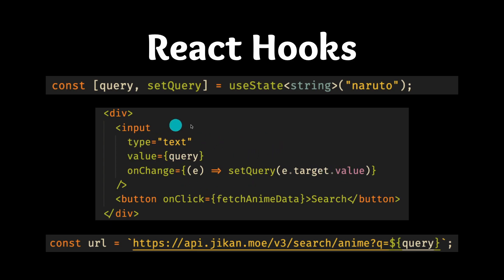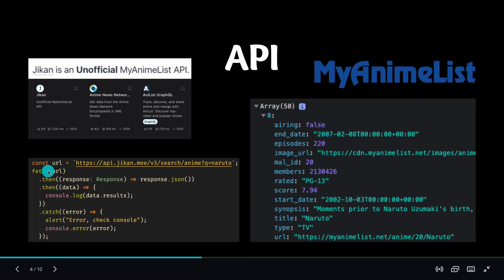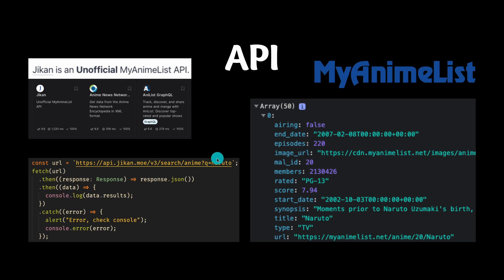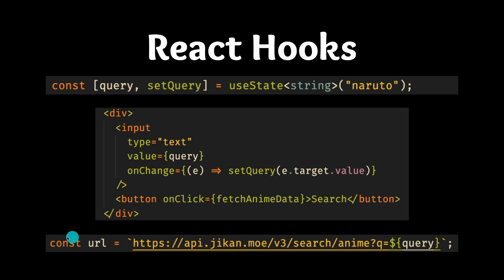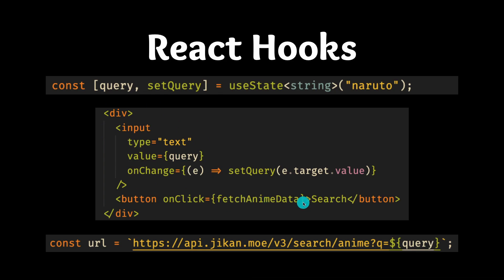So if I were to start typing inside the input field and say 'Pokemon', then query gets set to 'Pokemon'. We also want to create a button, and this button is going to fetch the anime data. The fetch anime data button uses this code, and the main difference is that instead of hard-coding 'Naruto', we're going to be dynamically setting the query variable. Basically, whenever we press this button, we're going to be getting the anime data for whatever we put inside of our query.